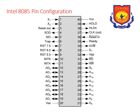Pin numbers 6, 7, 8, 9, 10, and 11 are from the interrupt group. Pin number 6 — TRAP — has the highest priority. RST 7.5, 6.5, and 5.5 are vector interrupts, meaning they have predefined memory locations. Then INTA is the interrupt acknowledgement signal for the second processor or other ICs or devices.